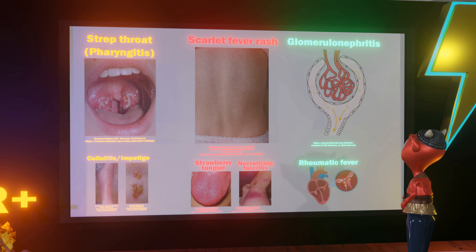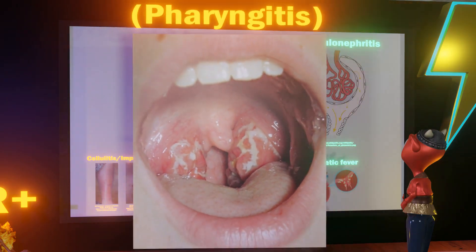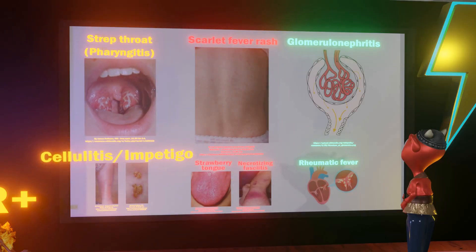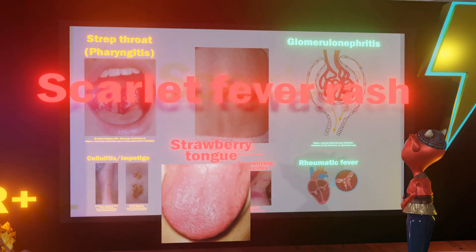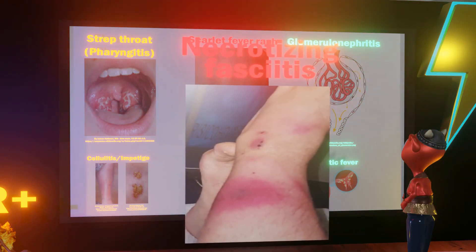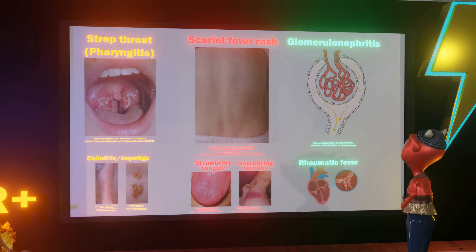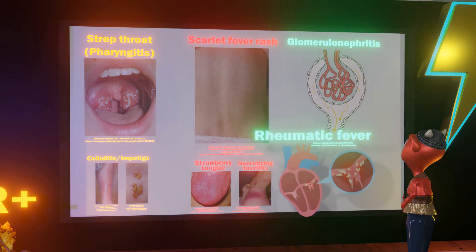Diseases caused by strep pyogenes include: pharyngitis (strep throat), skin infections such as cellulitis and impetigo, and scarlet fever. Most people know about the strawberry tongue, but scarlet fever also causes a scarlet fever rash. Strep pyogenes also causes necrotizing fasciitis, which is actually caused by the same virulence factor responsible for scarlet fever.